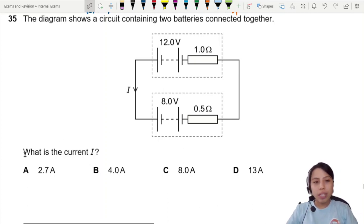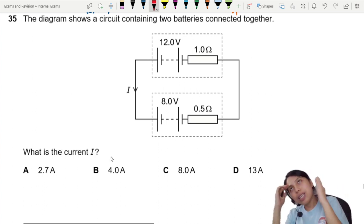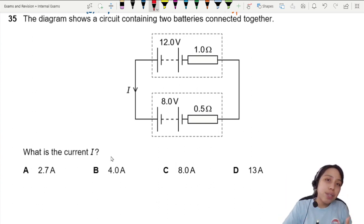Here in this diagram we have two batteries connected together and they ask us what's the current. There are two methods to do this - they're all the same method but different ways of thinking about how to solve this.